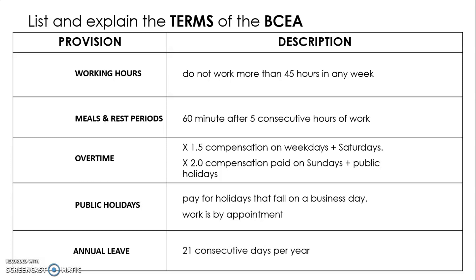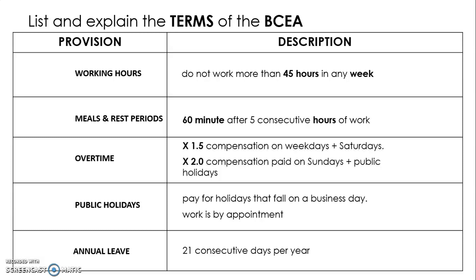Let's look at our keywords or terms. For working hours, it is 45 hours and week. For meals and rest periods, it is 60 minutes and hours — a 60-minute break for five consecutive hours. For overtime, we highlight the numbers 1.5 and 2. For public holidays, we highlight the words pay and holidays. And for annual leave, we highlight the terms 21 and days per year.